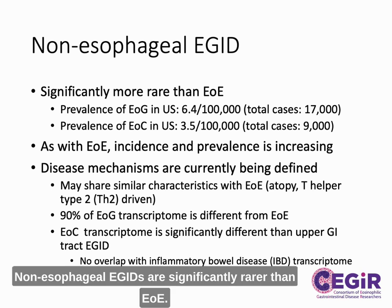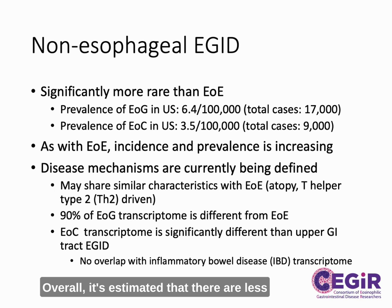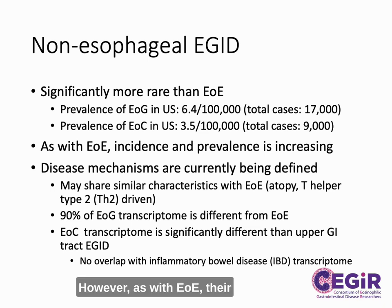Non-esophageal eGIDS are significantly rarer than EOE. Overall, it's estimated that there are less than 20,000 cases in the United States. However, as with EOE, their incidence and prevalence are increasing.